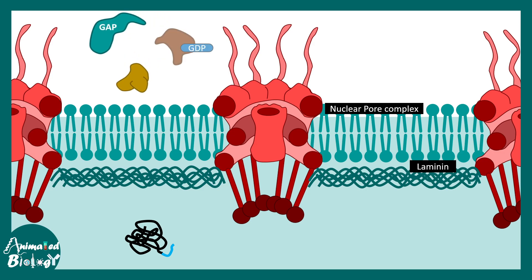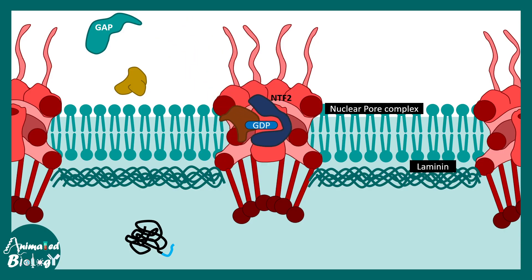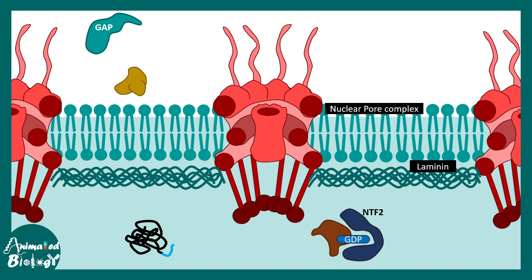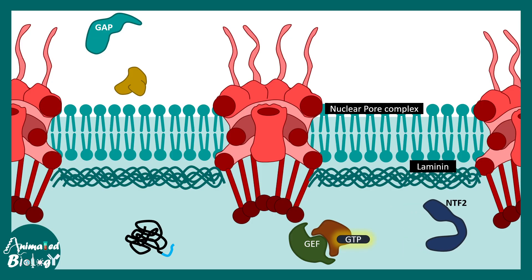GAP hydrolyzes the GTP on RAN, ultimately making RAN-GDP. RAN-GTP is inactive in terms of functionality in the cytosol, so it is not required there. There are proteins known as NTF2, which are a category of importins — import receptors — that bring RAN-GDP back inside the nucleus. RAN is functional only in the GTP-bound state, so inside the nucleus, a molecule known as GEF, or guanosine nucleotide exchange factor, exchanges the GDP back to GTP, making RAN active again.